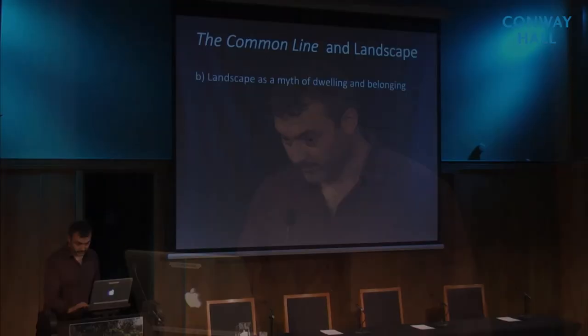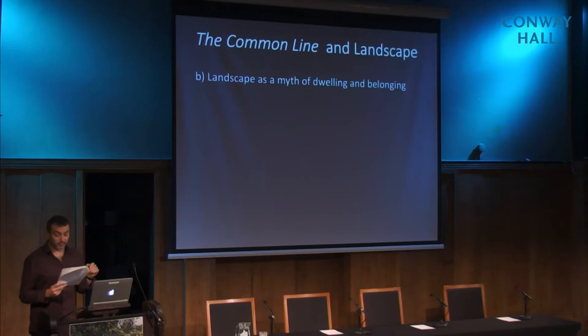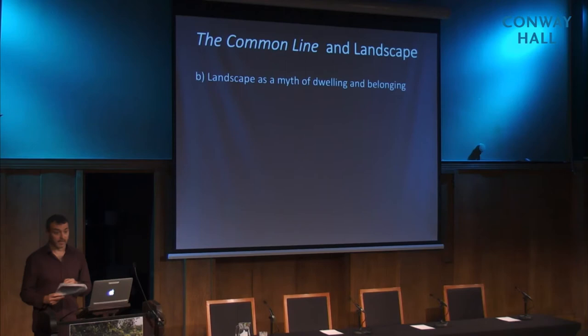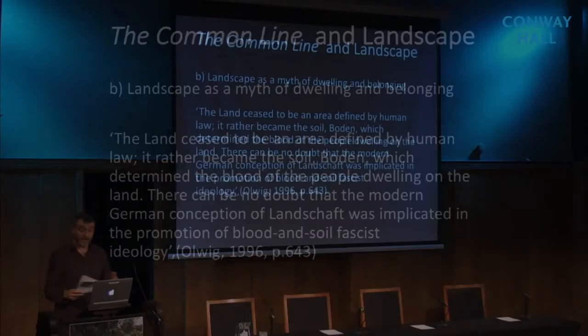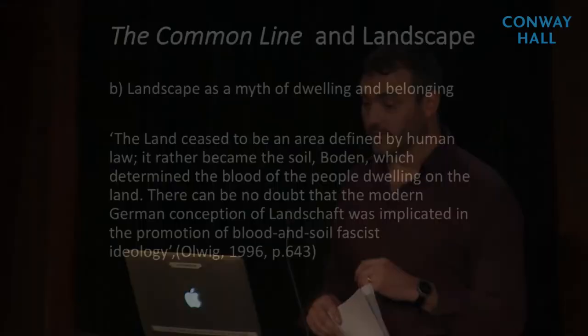The second myth in landscape is a myth of dwelling and belonging. If landscape — and especially visual or perspectival landscape — perpetuates a myth of not belonging, we would argue that a myth of belonging to landscape, of being at one with it, and by extension at one with yourself and at one with your neighbours, sits at the heart of many extreme ethnic or national ideologies of landscape. For example, Ken Allwig notes the development of this ideology in Germany, where the land ceased to be an area defined by human law and rather became the soil — Boden — which determined the blood of the people dwelling on the land. There could be no doubt that the modern German conception of Landschaft was implicated in the promotion of blood and soil, fascist ideology.